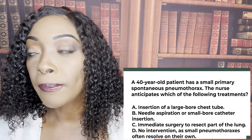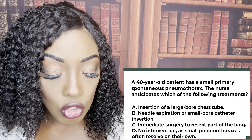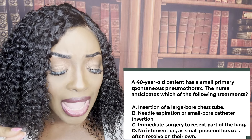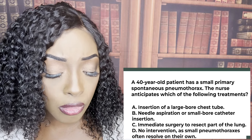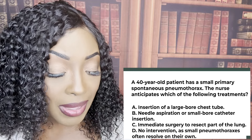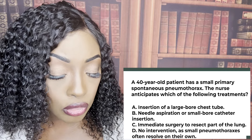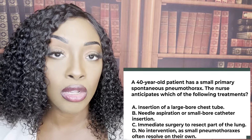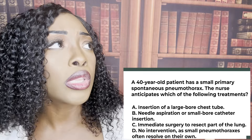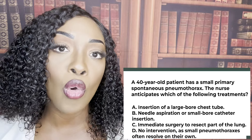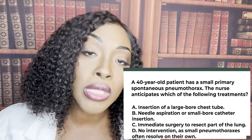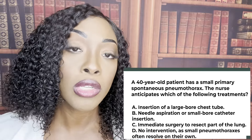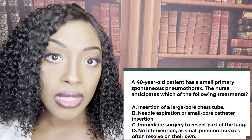If it gets worse, you'd expect B — needle aspiration or small bore catheter insertion. If it's worse than that, you'd expect A — insertion of a large bore chest tube. And if it's really bad, the patient would need surgery and a resection. This goes across the board for nursing: we always go from least invasive to most invasive. So if you ever get an ordered response question with no idea of the order, go from least invasive to most invasive — that will increase your chances of getting the question correct.